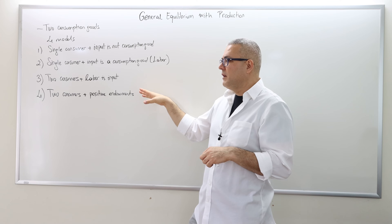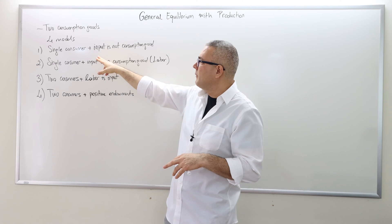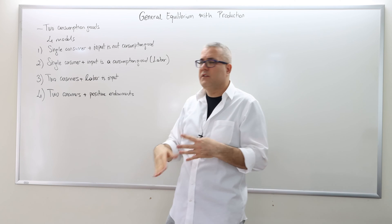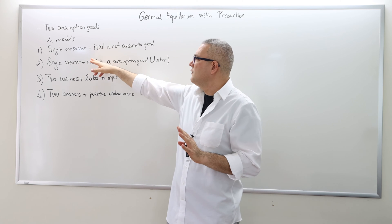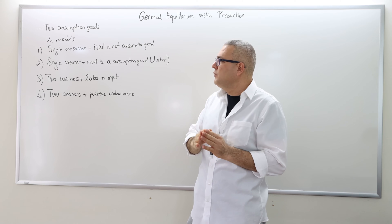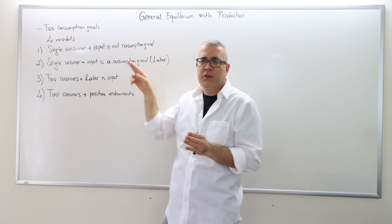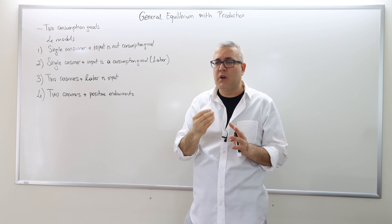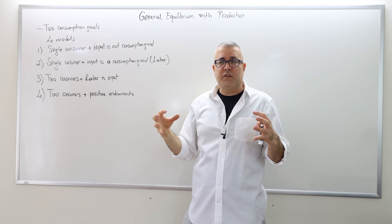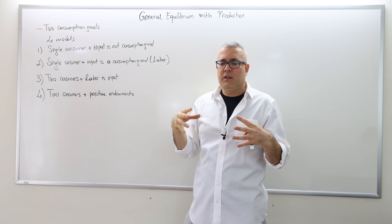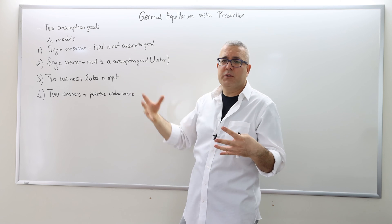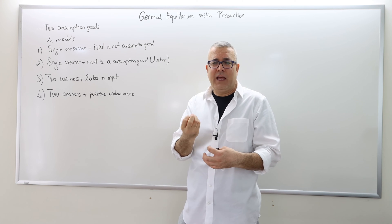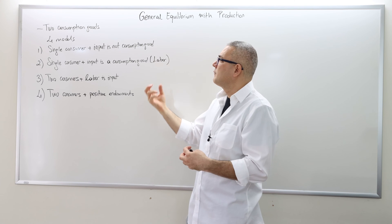In the first model, I'm going to talk about a single consumer. Because the two-consumer case is more complicated, just one consumer. There's going to be a firm, and the firm uses input to produce two consumption goods. But the input is not a consumption good, meaning the agent does not get any utility out of this input. Think of the input as a piece of land, and then the consumption goods are the apples and the bananas the firm can produce out of this land. The consumer doesn't get any utility from the land itself, but from the production goods — apples and bananas.